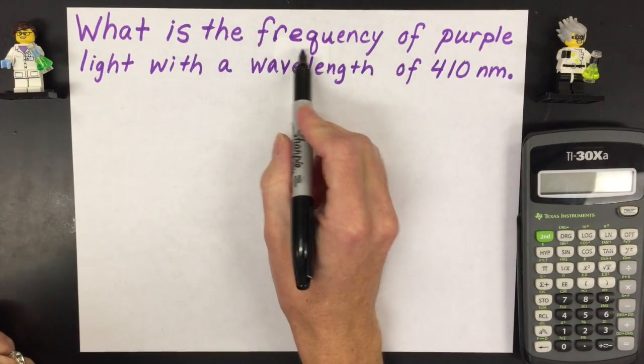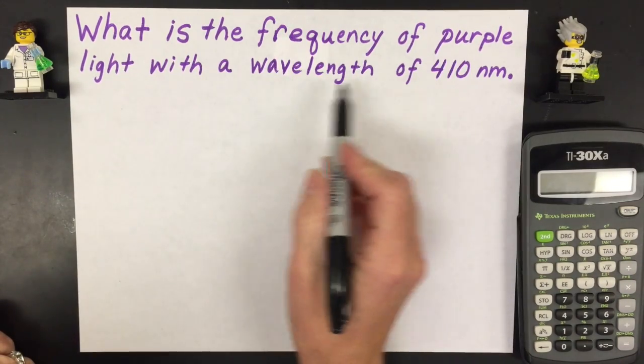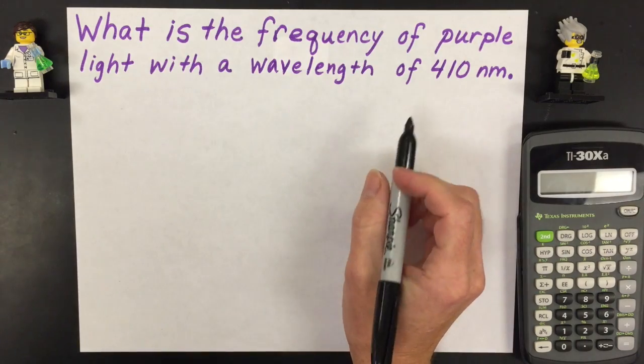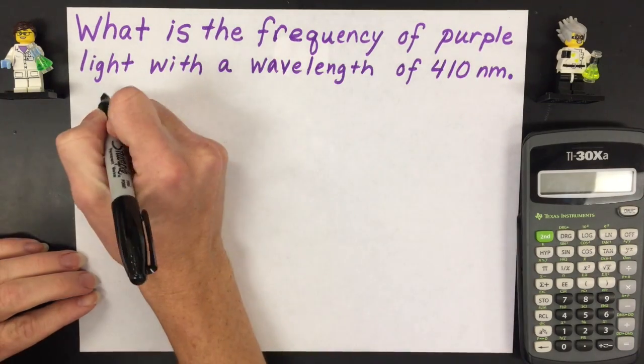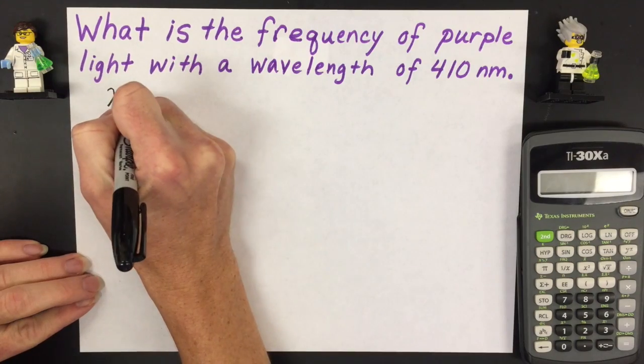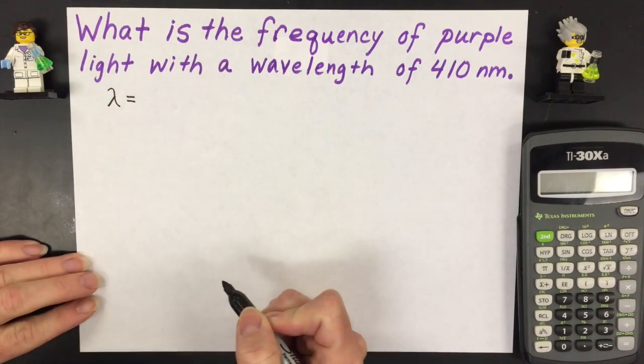So we're going to try to find the frequency of purple light with a wavelength of 410 nanometers. The first thing you're going to need to do is write down your variables and your constants to figure out what you're trying to solve for.